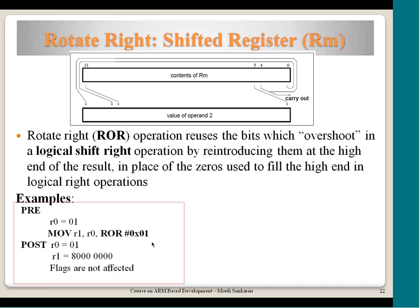Example of rotate right: R0 contains 1 (0x00000001), and we do ROR #1. The LSB which is 1 shifts out and sits at bit position 31, making the MSB 1. So the destination register R1 becomes 0x80000000. Since S is not mentioned in this example, the carry flag is not impacted.